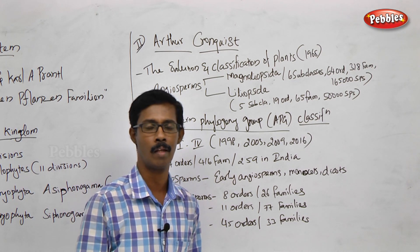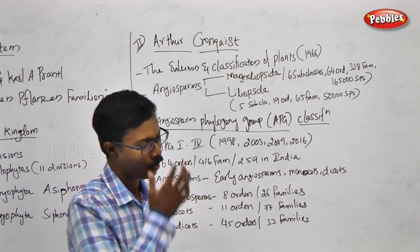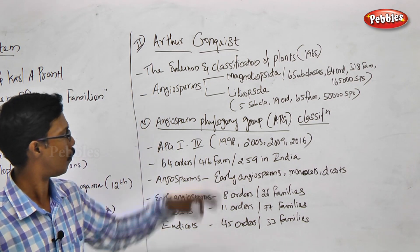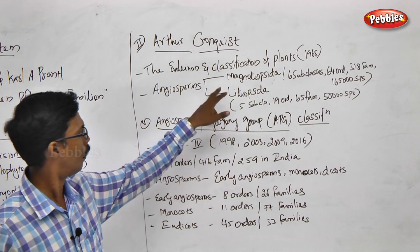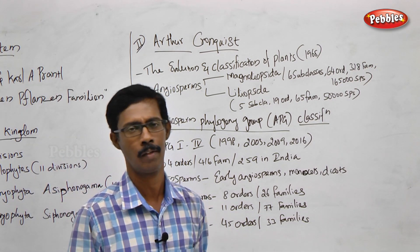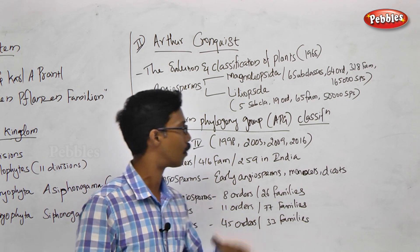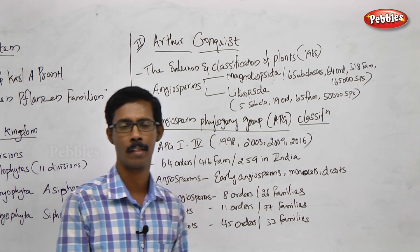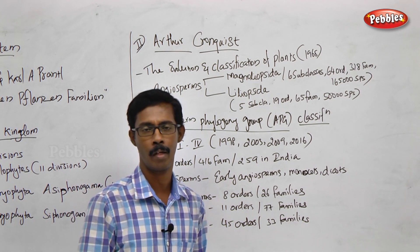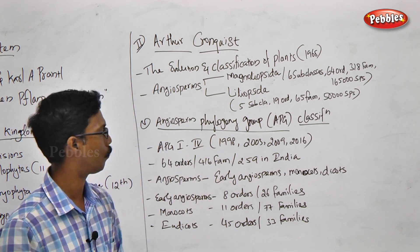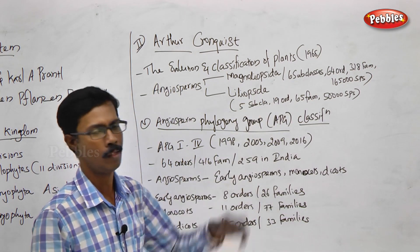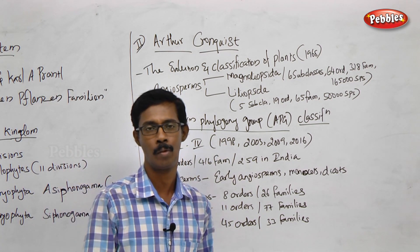This is a complicated system. Angiosperms are divided into two divisions: Magnoliopsida and Liliopsida. In Magnoliopsida, around 165,000 species are included, covering 318 families, around 64 orders, and 6 subclasses, forming subdivisions. This is a highly complicated taxonomical classification system. In Liliopsida, they include 50,000 species, 65 families, 19 orders, and 5 subclasses.